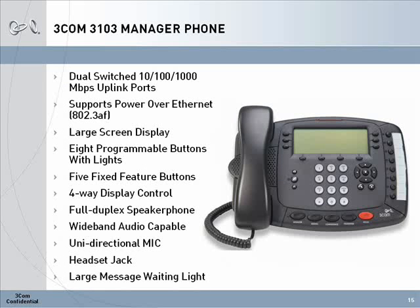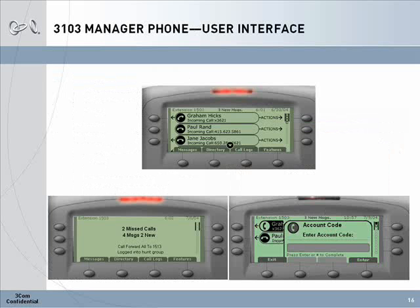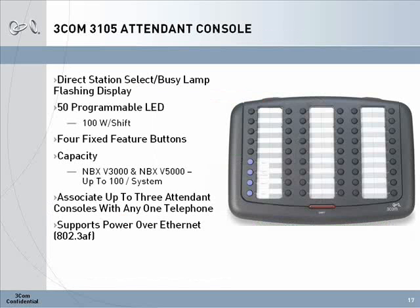The 3103 manager phone has a gigabit Ethernet switch built in, allowing a connected computer to run at full gigabit speeds if the closet switch is gigabit Ethernet capable. This phone has eight programmable buttons and a built-in headset jack. The large display on the 3103 offers additional information to the user and features dynamic soft keys located around the display to help navigate the phone and handle calls. The 3103 phone can show the status of up to three calls simultaneously. The soft keys can perform actions based on the state of the call, and in an idle state the phone displays additional phone status information.